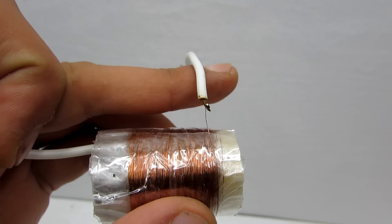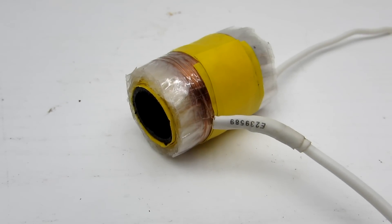At the end, solder the second high voltage wire and insulate with heat shrink tube. Put extra insulation beneath.